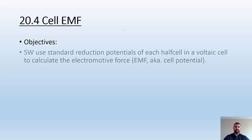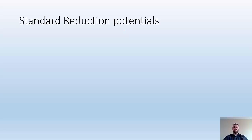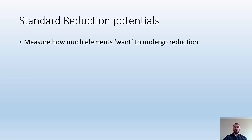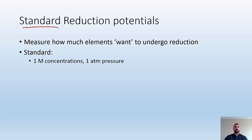Our objectives are to use standard reduction potentials of each half cell in a voltaic cell to calculate the electromotive force — shorthand EMF — which is also known as a cell potential, basically how many volts would this produce. So we're going to talk about standard reduction potentials first. They're basically a measure of how much elements want to undergo reduction. Standard means one molar concentrations, or one atmospheric pressure if you're using gas.